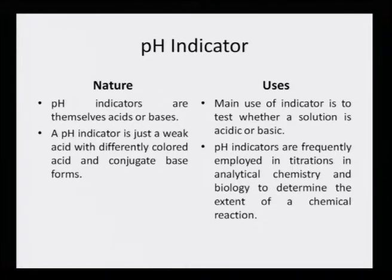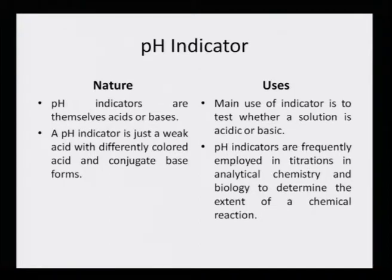The main use of an indicator is to test whether a solution is acidic or basic. If we have no access to a pH meter, we simply dip a litmus paper to find whether the solution is acidic. That litmus paper has been coated with a dye which shows a change in coloration, and that is the kind of exercise we wanted to do with rose anthocyanin.